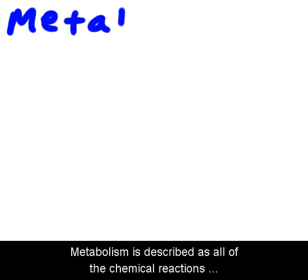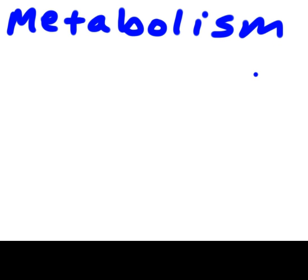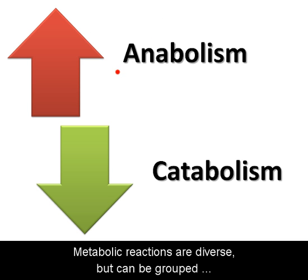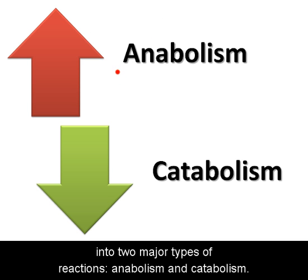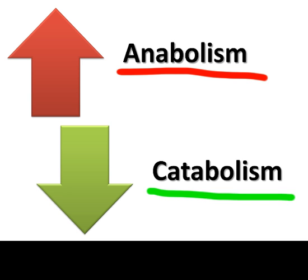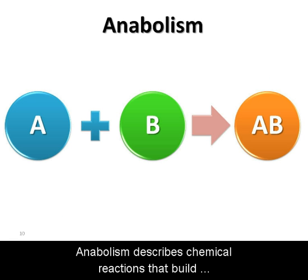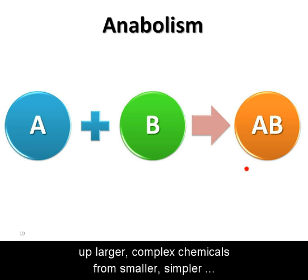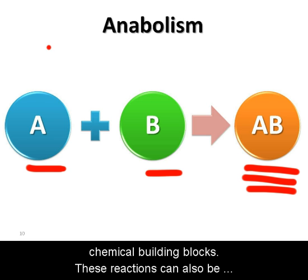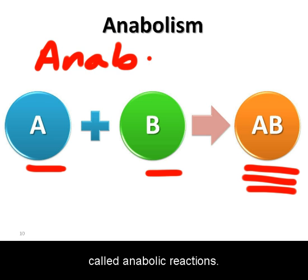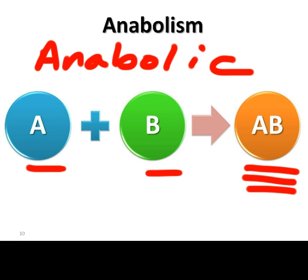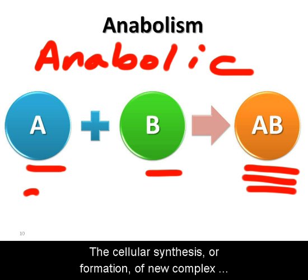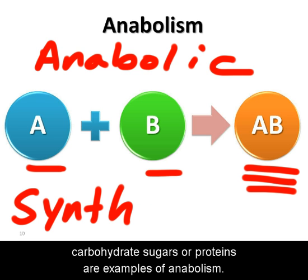Metabolism is described as all of the chemical reactions that occur in the body. Metabolic reactions are diverse, but can be grouped into two major types: anabolism and catabolism. Anabolism describes chemical reactions that build up larger, complex chemicals from smaller, simpler chemical building blocks. These reactions can also be called anabolic reactions. The cellular synthesis, or formation, of new complex carbohydrate sugars or proteins are examples of anabolism.